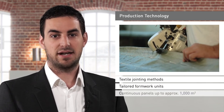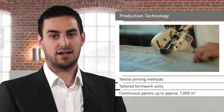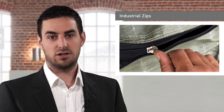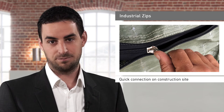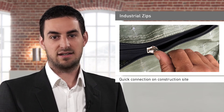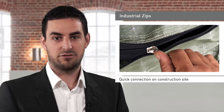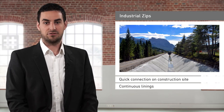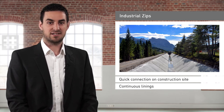It is possible to manufacture continuous panels up to approximately a thousand square metres in size. Even larger units can be created on site by connecting these panels together with industrial zips. There is no limit to the number of adjacent panels that can be joined together into continuous lengths, making it possible to provide continuous linings for linear structures such as power station canals.